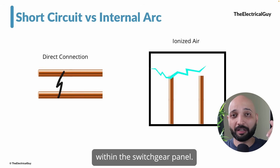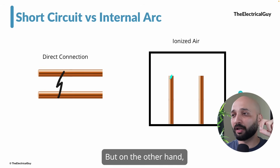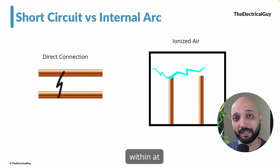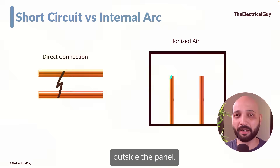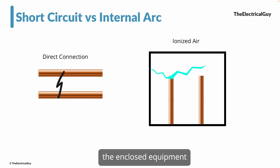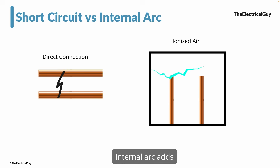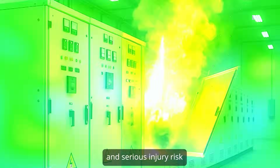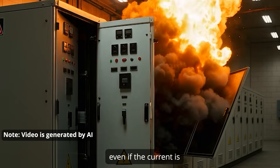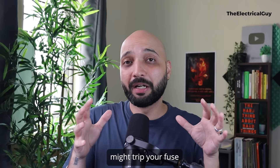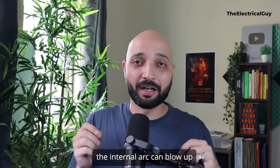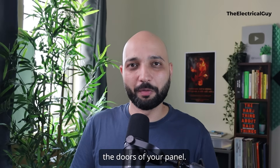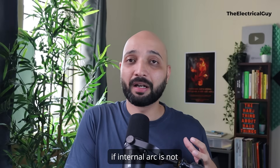A short circuit is not limited to inside the switchgear panel — it can happen outside as well. But internal arc is limited within the switchgear panel, happening only inside enclosed equipment where heat and pressure have nowhere to go. While both faults involve high current, internal arc adds two extra dangers: intense heat and mechanical pressure. The result is explosions, fires, and serious injury risk even if the current is interrupted quickly. To sum up, a short circuit might trip your fuse or breaker, but an internal arc can blow up the doors of your panel.